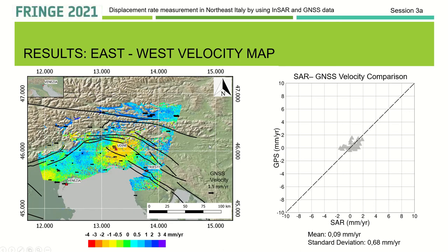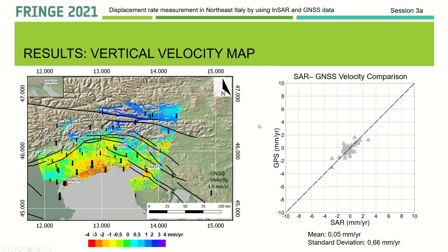After the decomposition, the first result is a map in the east-west direction. The lines show the seismogenic folds taken from the European database, and the black arrows show the east-west velocity according to GNSS stations. We notice a signal around Udine where the area is moving towards the west at a rate of about 1–1.5 mm per year. There are also other signals in the opposite direction, and a plot comparing SAR and GNSS velocity for the vertical map, showing good agreement.